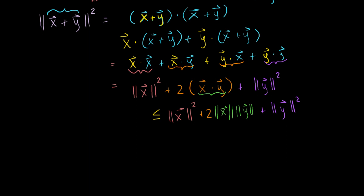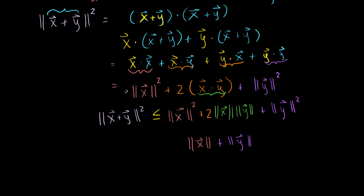Now what is this right-hand side? Remember, these are just numbers. This looks like a perfect square to me. The right-hand side is exactly the same thing as (||x|| + ||y||)², because if you square that out, you get ||x||² + 2·||x||·||y|| + ||y||². So our length of the vector x plus y squared is less than or equal to (||x|| + ||y||)².